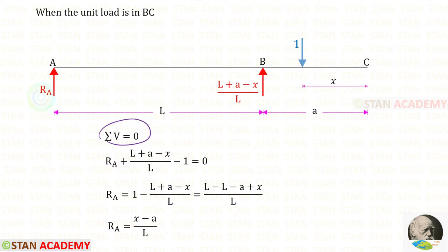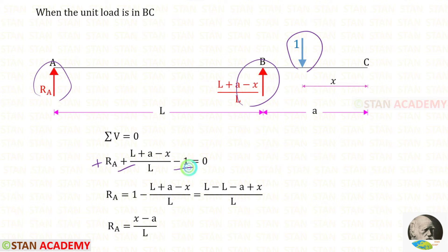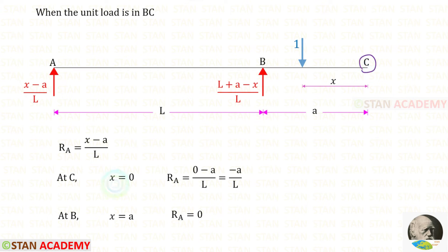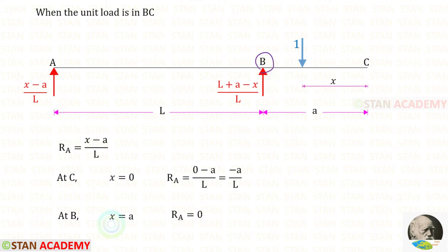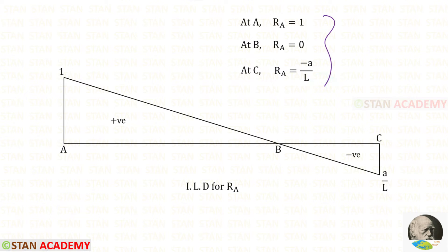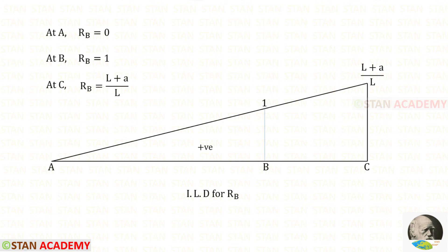Now let us apply this rule and find RA. RA and RB are acting upwards so both are positive. The unit load is acting downwards so it will be negative. For RA, we will get (x minus A) upon L. At point C, x equals 0, so RA equals minus A upon L. At point B, x equals A, so RA equals 0. Using these three values, we can draw the ILD for RA — this line should be linear. And using these three values, we can draw the ILD for RB.